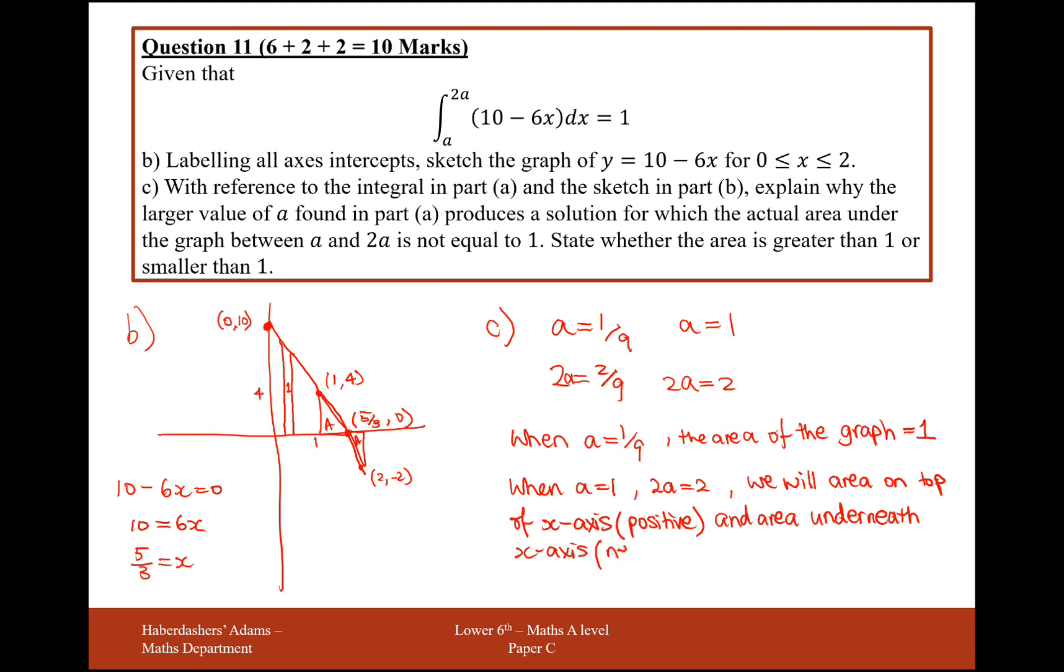Which will actually give us a negative, effectively a negative area value. So that when you do add them together, yes, you'll get 1, but in fact the area here is going to be greater than 1. So the total area found here is greater than 1.